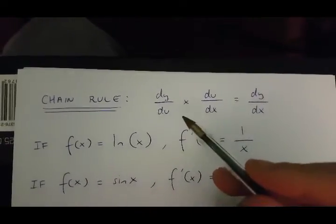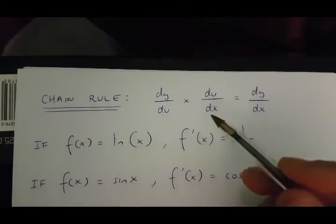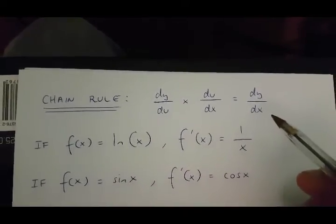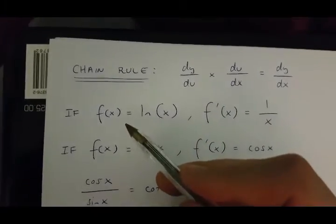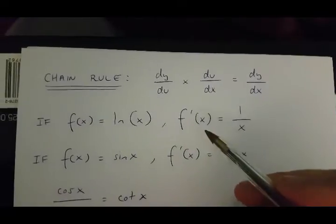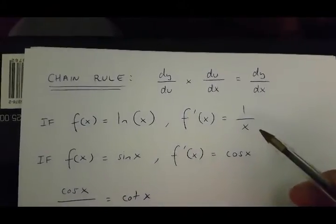That is dy over du times du over dx equals dy over dx. Also, if function of x equals ln x, then its derivative equals 1 over x.